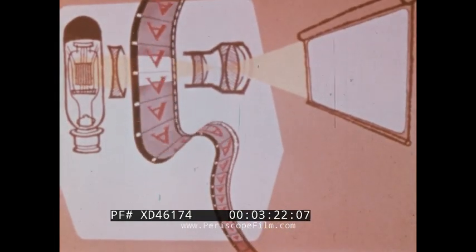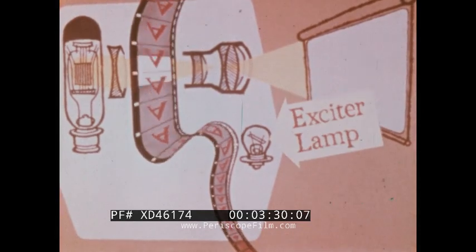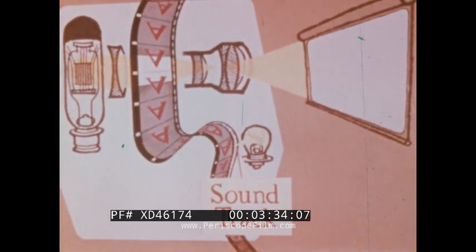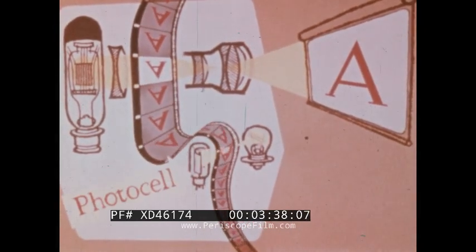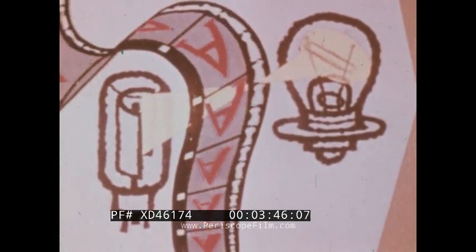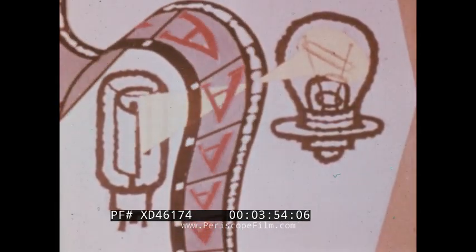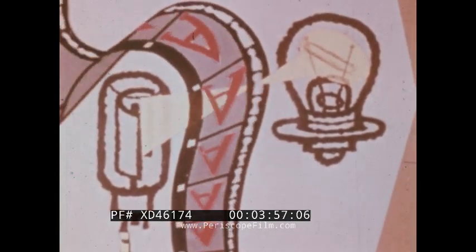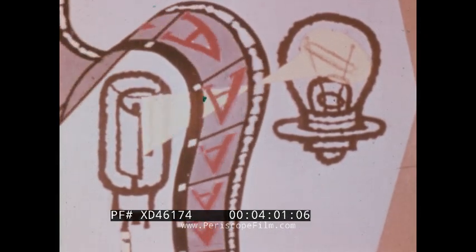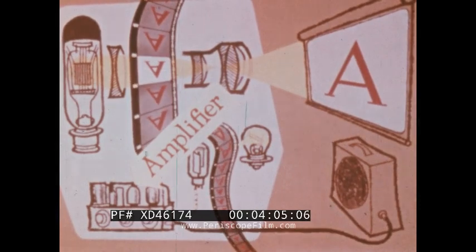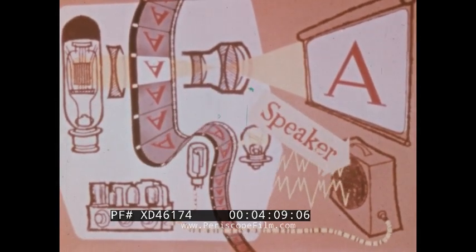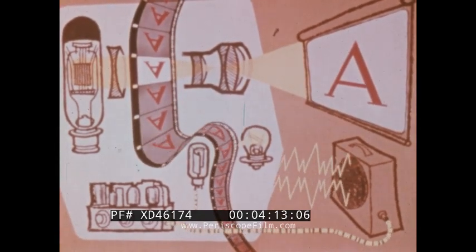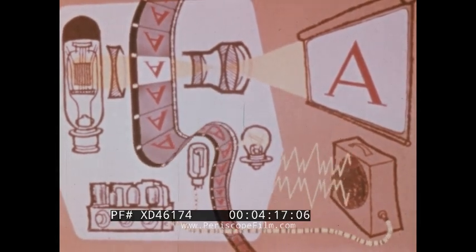Next, the film enters the sound section. Here, an exciter lamp passes light through the soundtrack area of the film. This light is received by the photo cell. Sound waves, which have been recorded as variations of light and dark areas on the film, cause the light beam reaching the photo cell to vary in brightness. This makes the photo cell produce electrical pulsations, which are then amplified and fed to the speaker. In contrast to the picture section, the film in the sound section must move smoothly and at a constant speed.